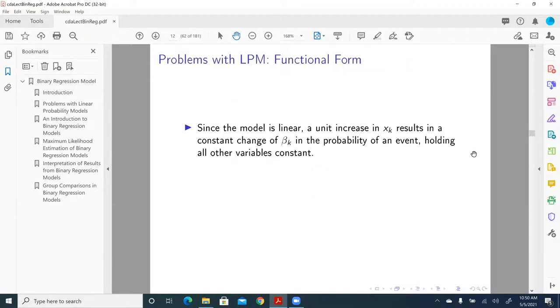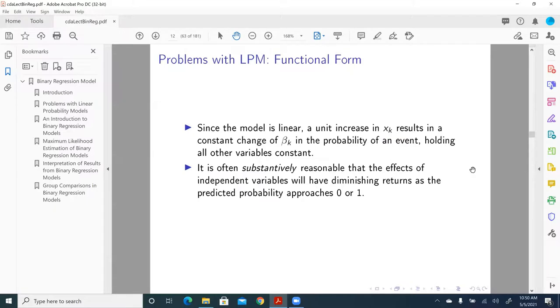Another problem is the functional form. Since the model is linear, a unit increase in x_k, a generic predictor, results in a constant change of beta_k in the probability of an event, holding all other variables constant. It is often substantively reasonable that the effects of independent variables will have diminishing returns as the predicted probability approaches 0 or 1.